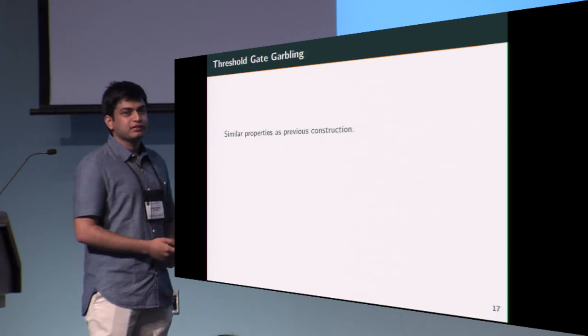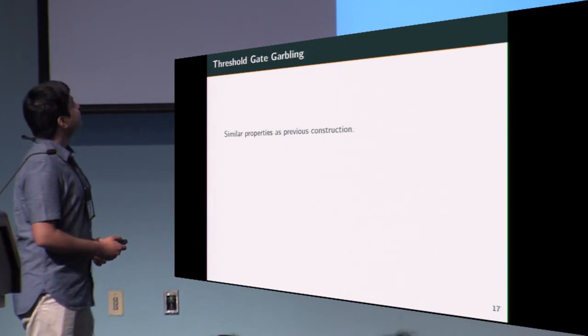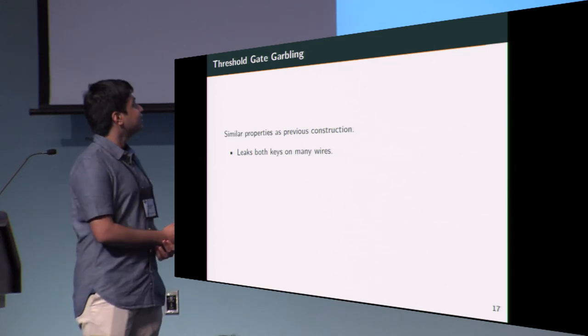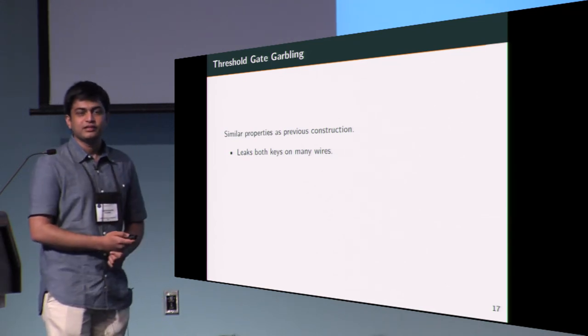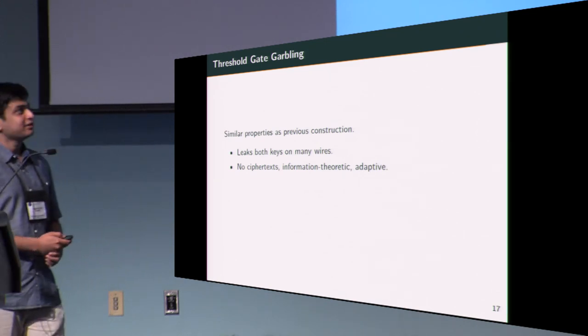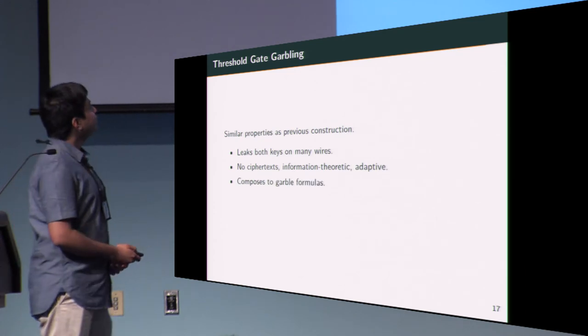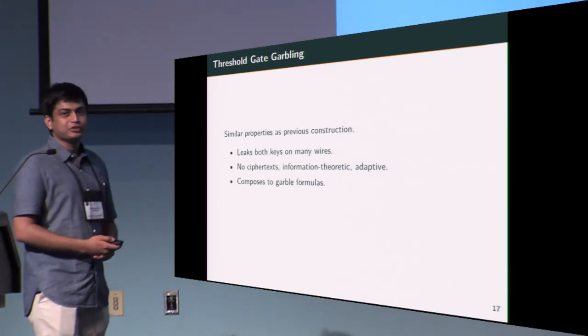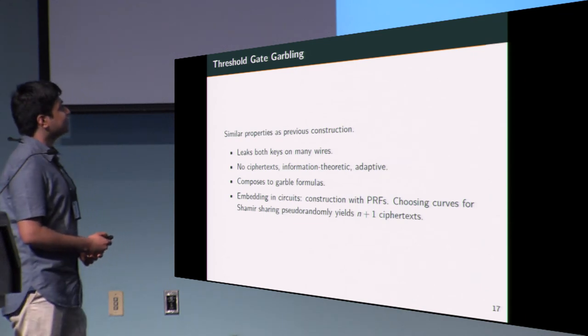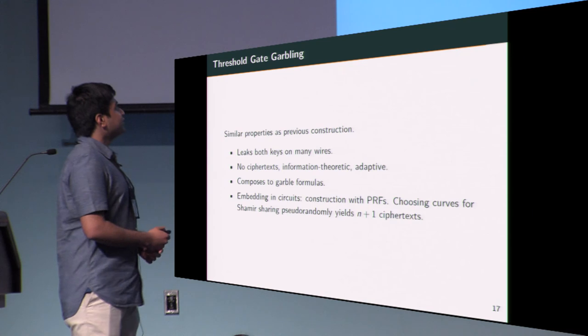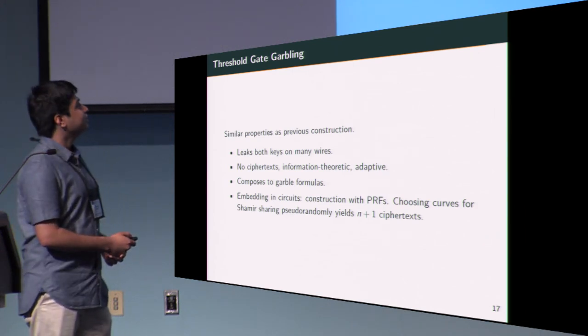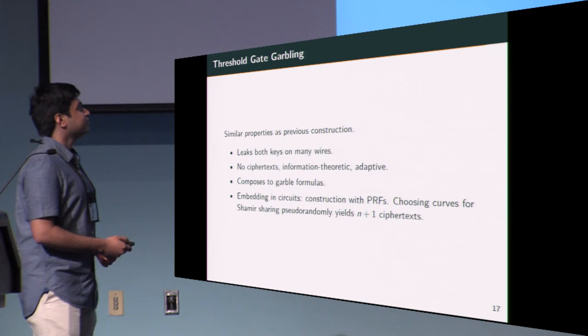The properties of this construction are somewhat similar to the AND gate garbling that I described earlier. You can clearly see that both keys on many wires are leaked after evaluation, as once you've reconstructed the correct key, you essentially have all the keys for the correct input. This construction produces no ciphertext either and is information theoretic and achieves adaptive security for this reason. We can show that this composes to garble threshold gates that are embedded in formulas. This can be embedded in circuits assuming very minimal symmetric key assumptions and choosing curves for the Shamir sharing that's required pseudo-randomly. This enables a garbled row reduction that lets us garble threshold gates that are embedded in Boolean circuits with only n plus 1 ciphertexts.